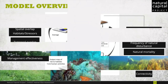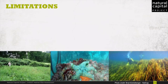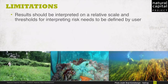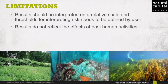As with all models, there are several limitations and caveats to be considered. Results should be interpreted on a relative scale. Due to the nature of the scoring process, results can be used to compare the risk of several human activities among several habitats within the study region, which can range in size from small local scales to a global scale, but these should not be used to compare risk calculations from separate analyses. Additionally, the user needs to define the thresholds for interpreting the severity of the risk. This may involve validating the model output with independent data on habitat quality or species abundance. Results do not reflect the effects of past human activities. Exposure to human activities in the past may affect the consequences of human activities in the present and future.